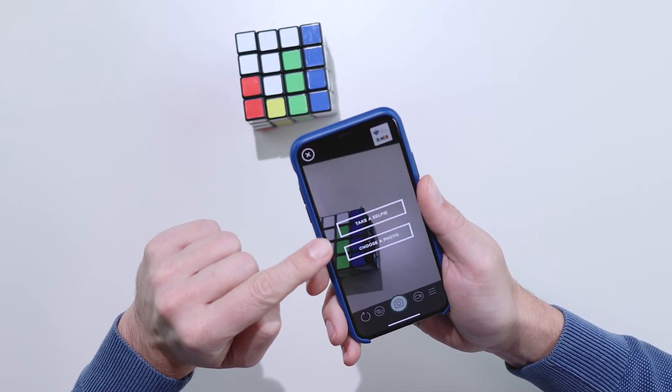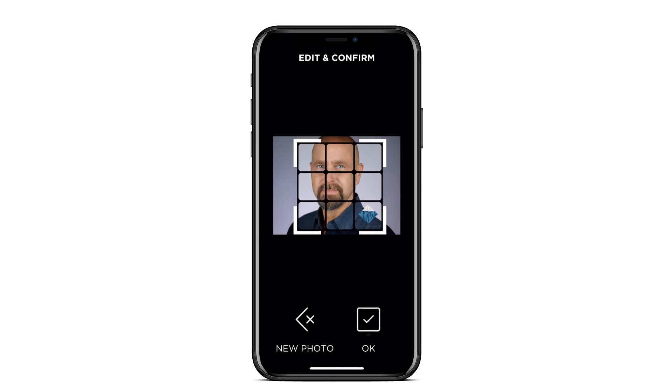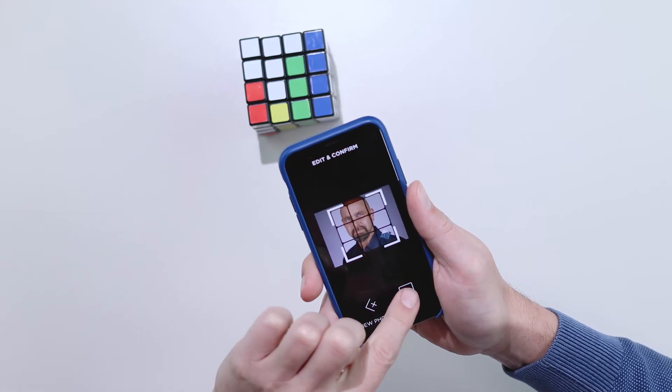Next, tap either take a selfie or choose a photo, and pick a photo from your gallery. When you've selected a picture, line up the grid in the way you prefer, and tap OK.